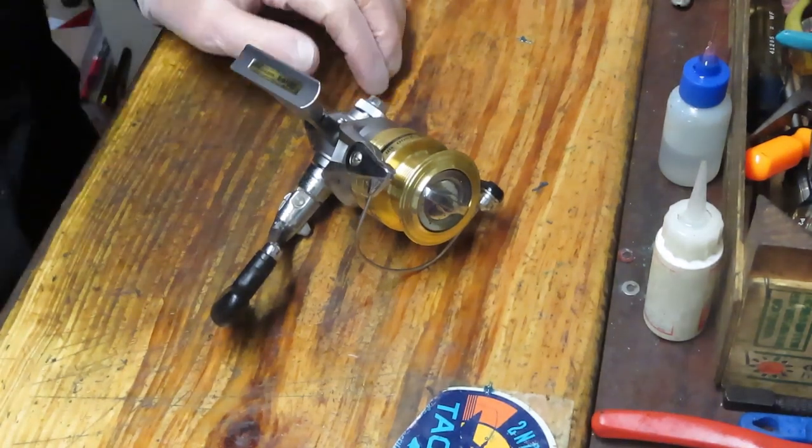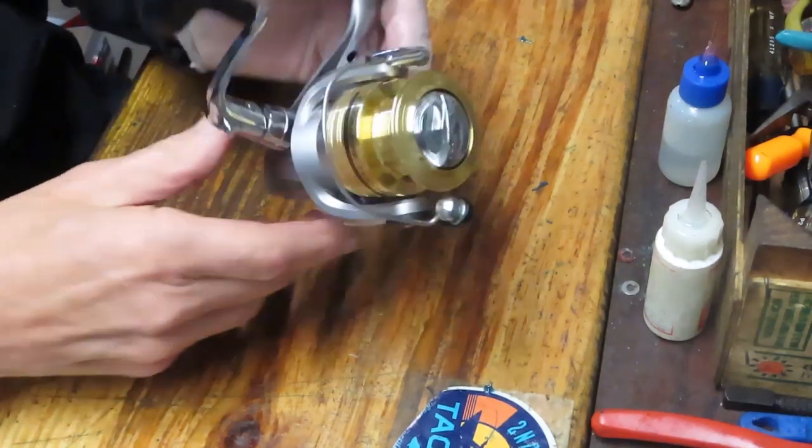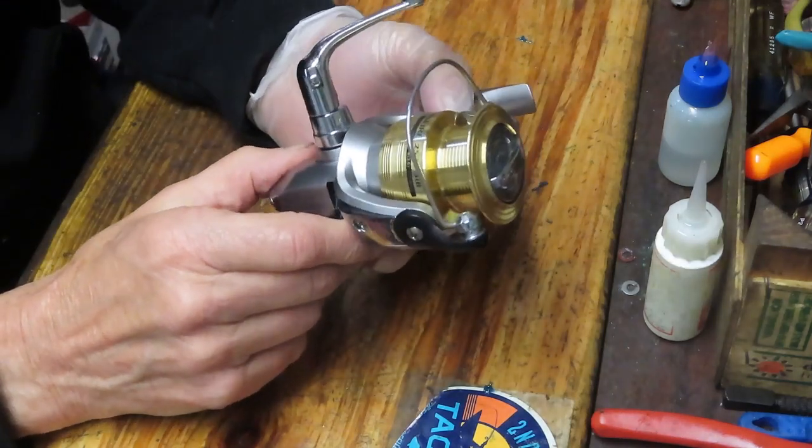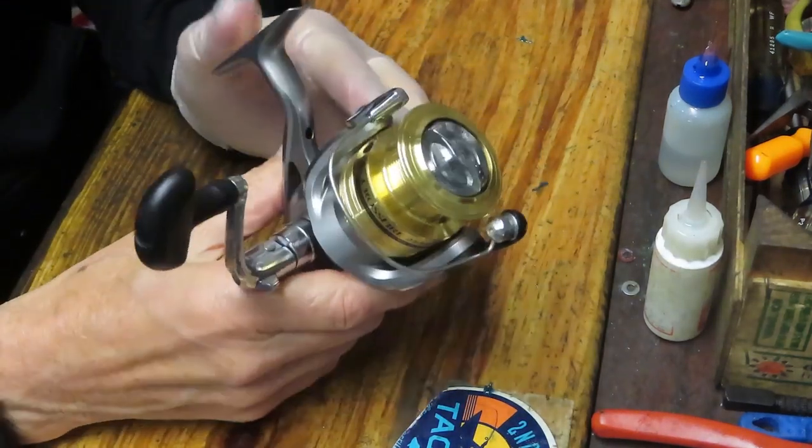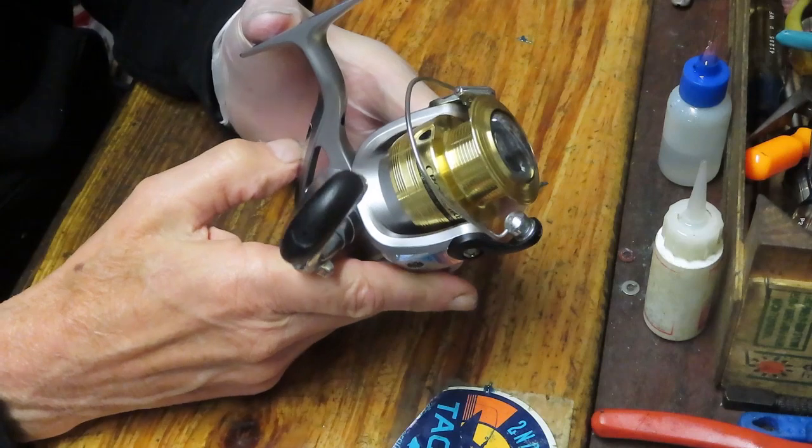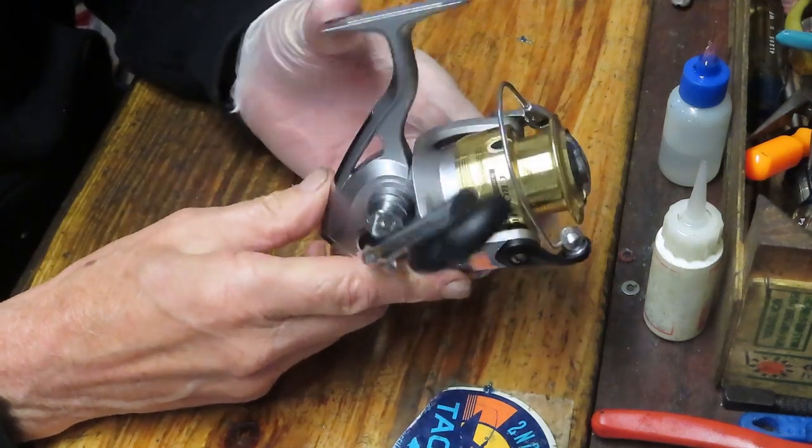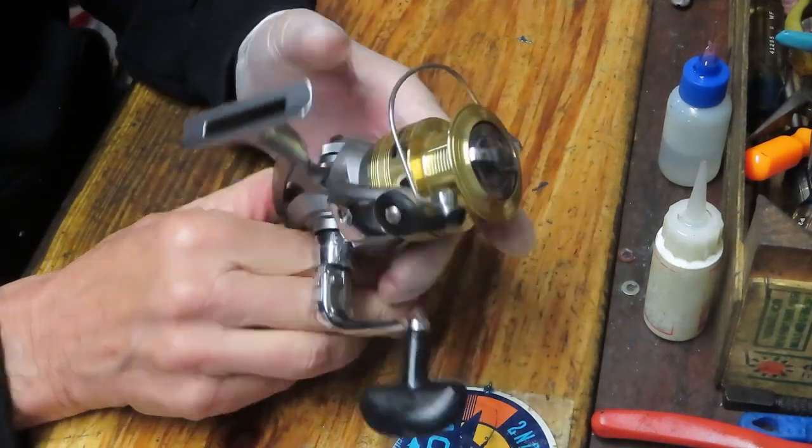Hi, this is Dennis with Second Chance Tackle. Today I have the opportunity to work on a Daiwa Crossfire reel. This is the Crossfire 2500 3IB, and it's a nice reel overall. It's very popular.